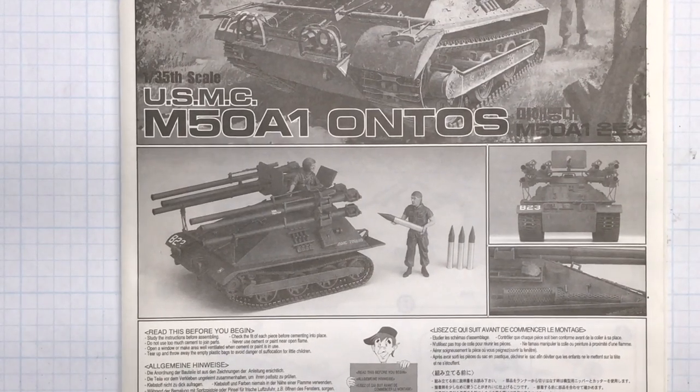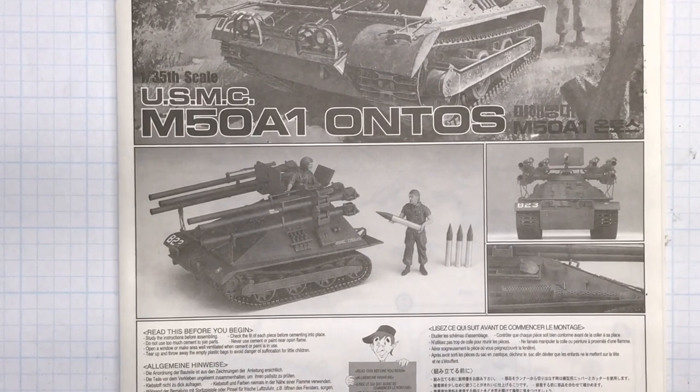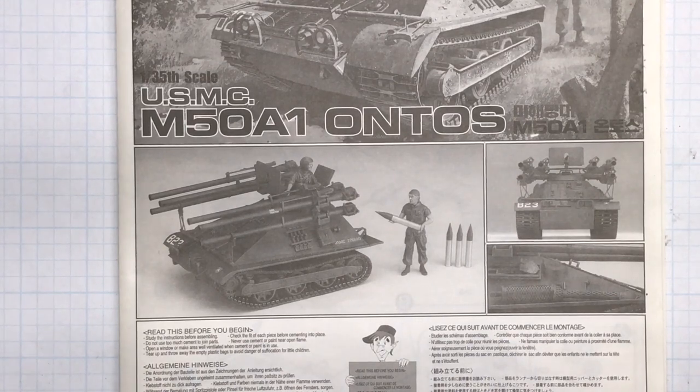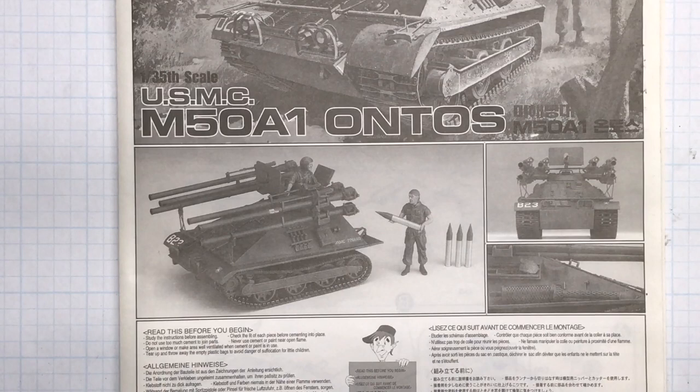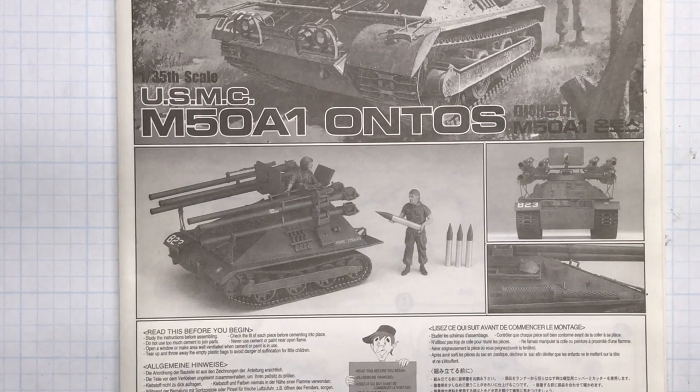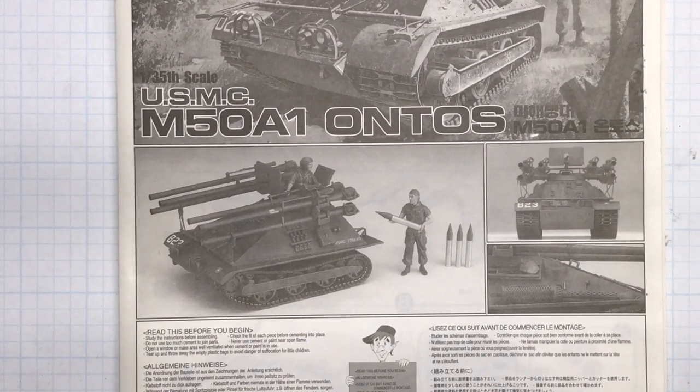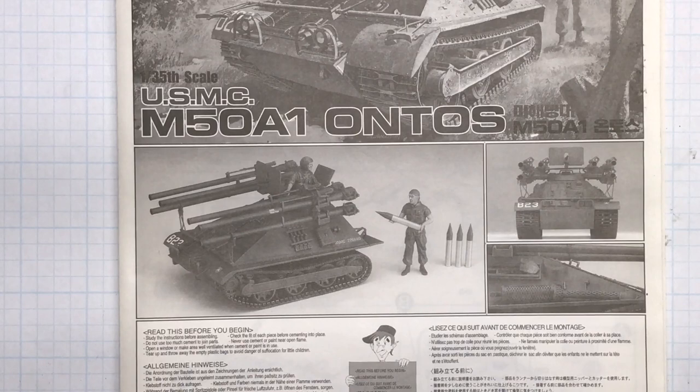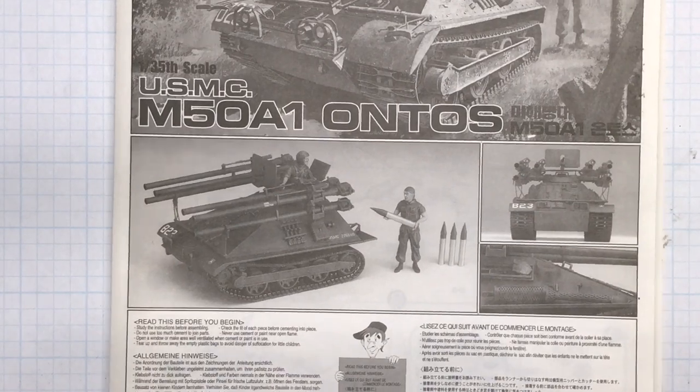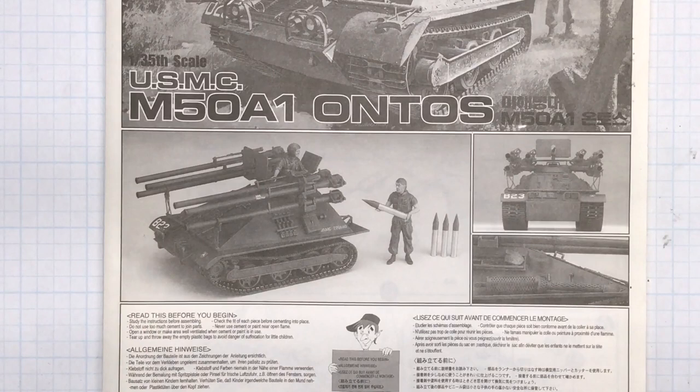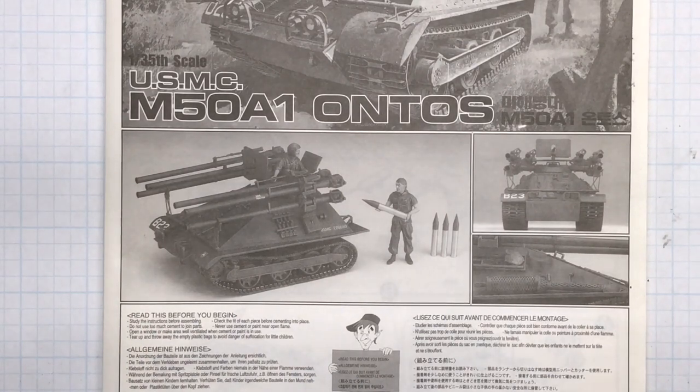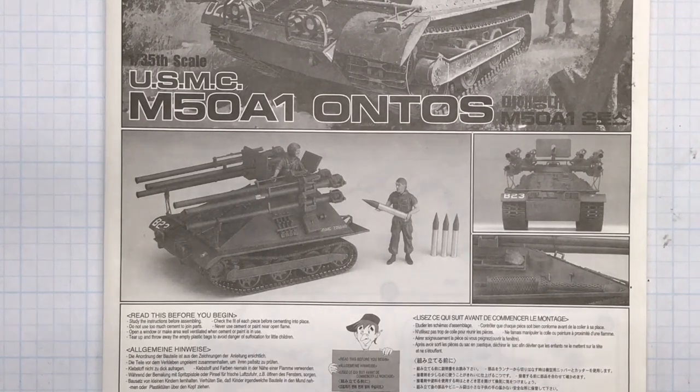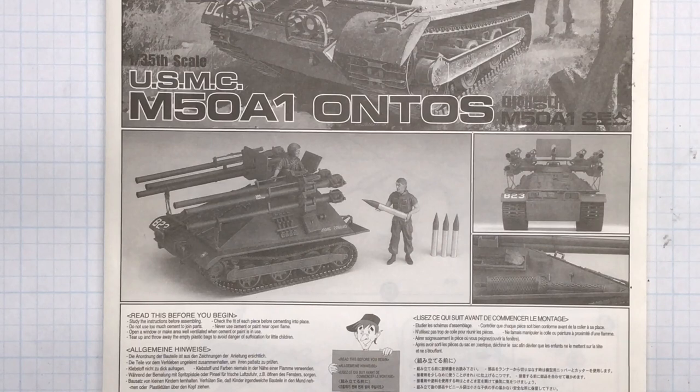All right, so that's basically it. That's the Academy M581 Ontos in 1:35th scale. So this will be my next project. As I say, because I'm really looking forward to doing something green for a change. The Dunkelgelb is getting kind of wearing kind of thin right now, although I do have some very interesting kits coming up in that color. But for now we're going to work on this good old Marine green, whatever color that is. I'll do a little bit of research, see what colors I'm going to need and all that, but talk about that when we actually get going on the project.